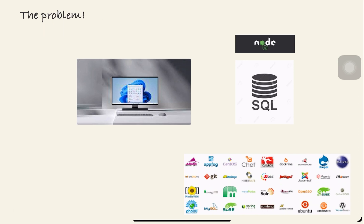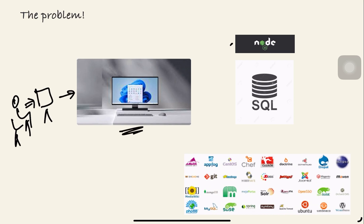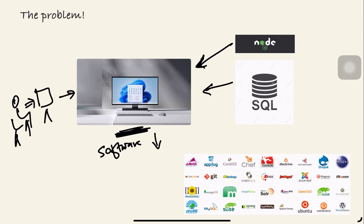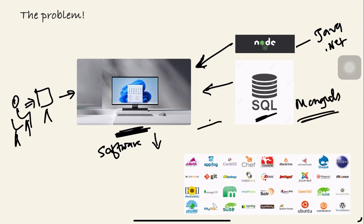Previously, if somebody wanted to install software into their machine, they had to go to a particular website to download it — for example Node.js, MySQL, and so on — and everything would be installed on that machine. Eventually the machine consumes lots of software and performance goes down. In the future, if you want to switch to Java or .NET, or from MySQL to MongoDB, you have to install on top of what's already there, which degrades performance further.